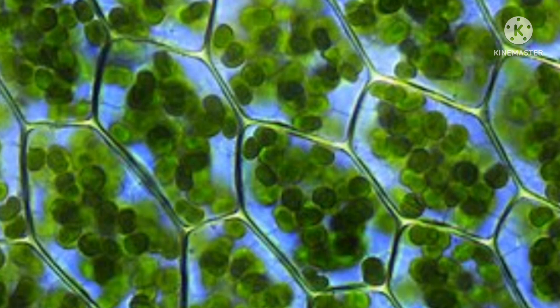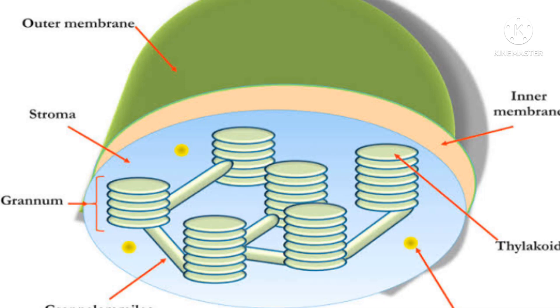This is where photosynthesis takes place. Chlorophyll gives the plant its green color. Chlorophyll's job in a plant is to absorb light, usually sunlight. The energy absorbed from light is transferred to two kinds of energy-storing molecules through photosynthesis. The plant uses the stored energy to convert carbon dioxide absorbed from the air and water into glucose, a type of sugar.